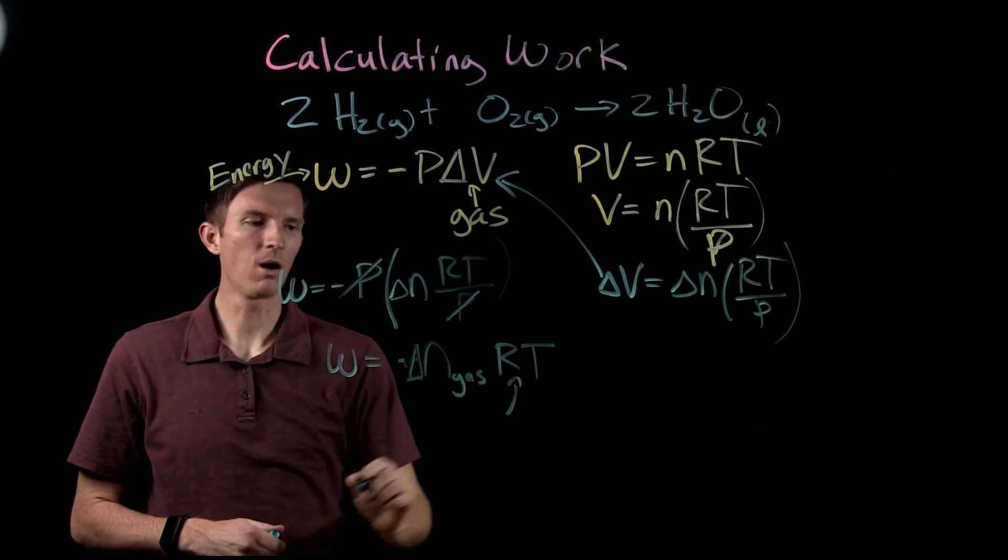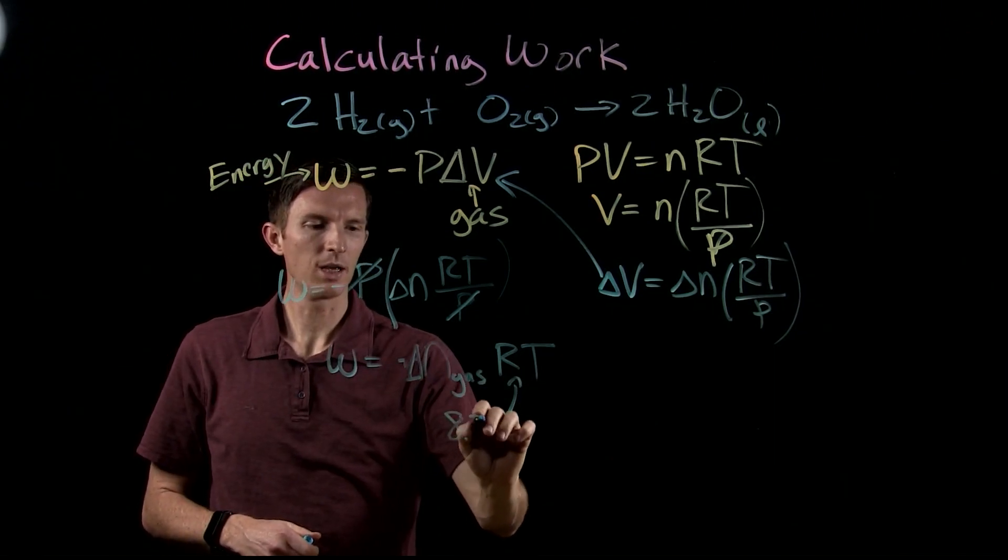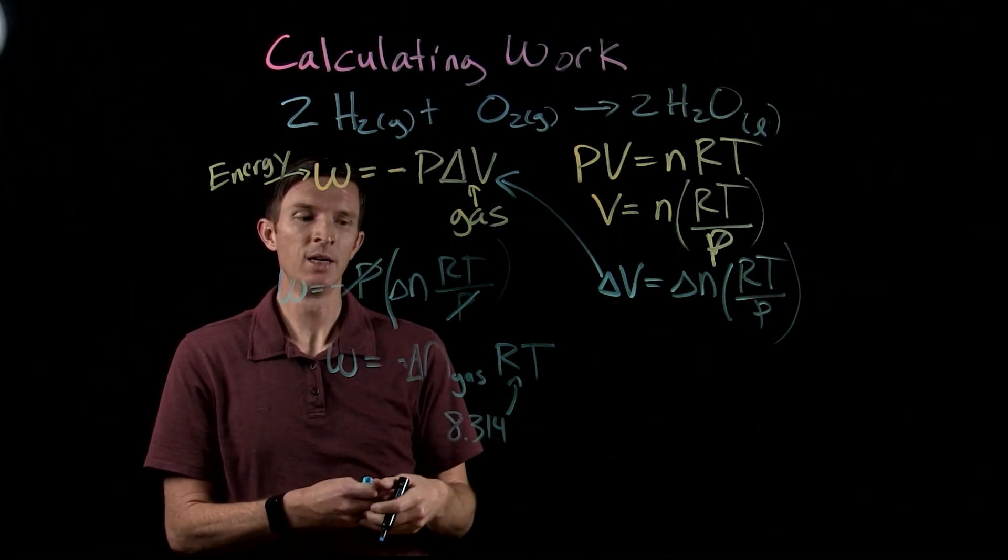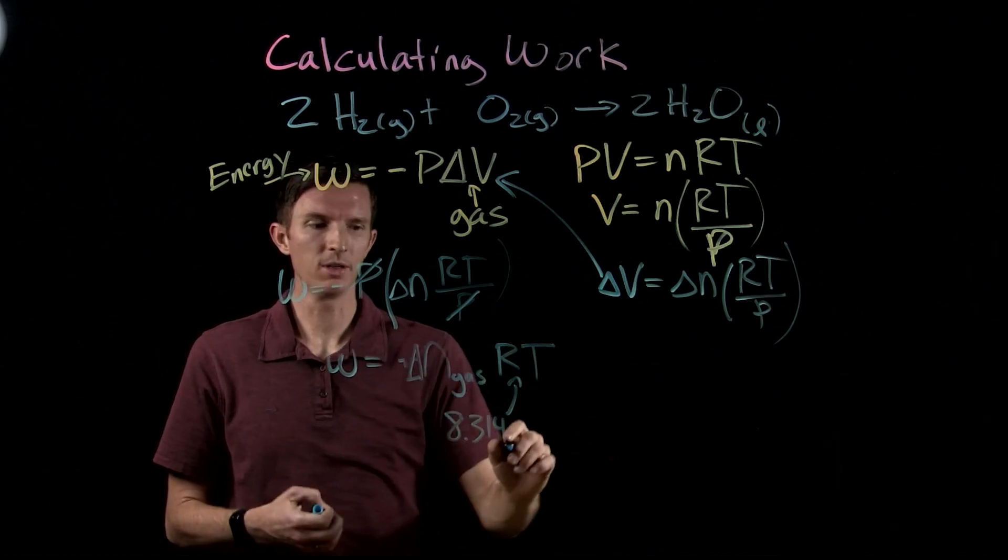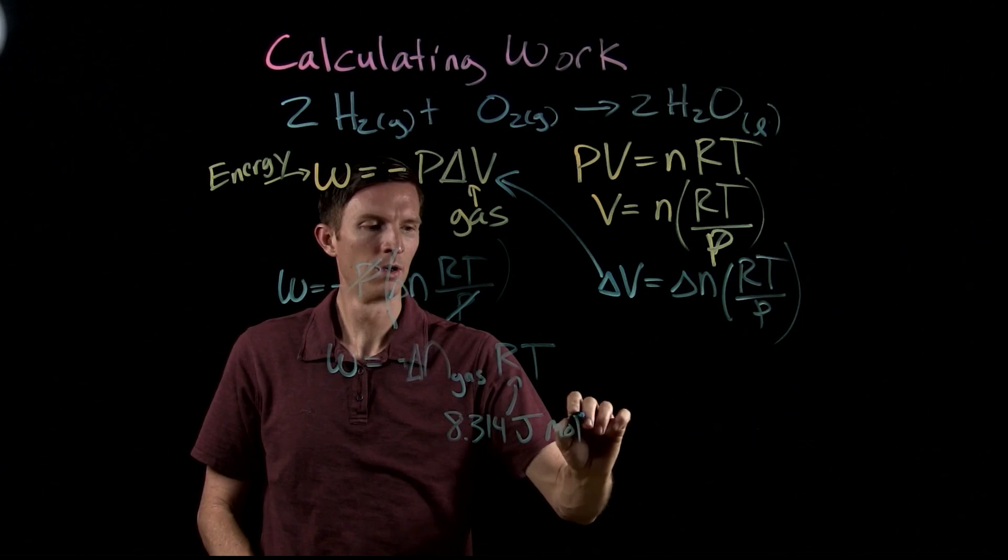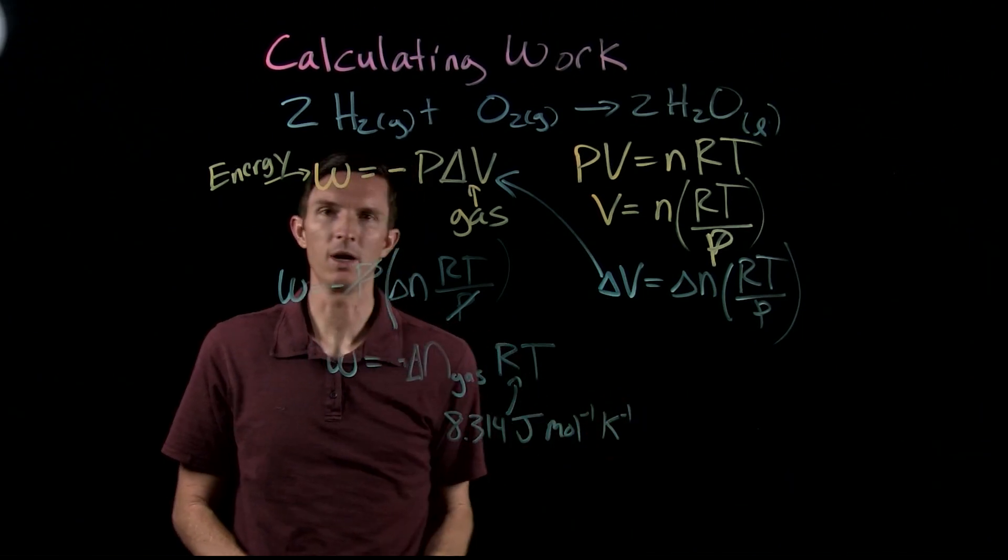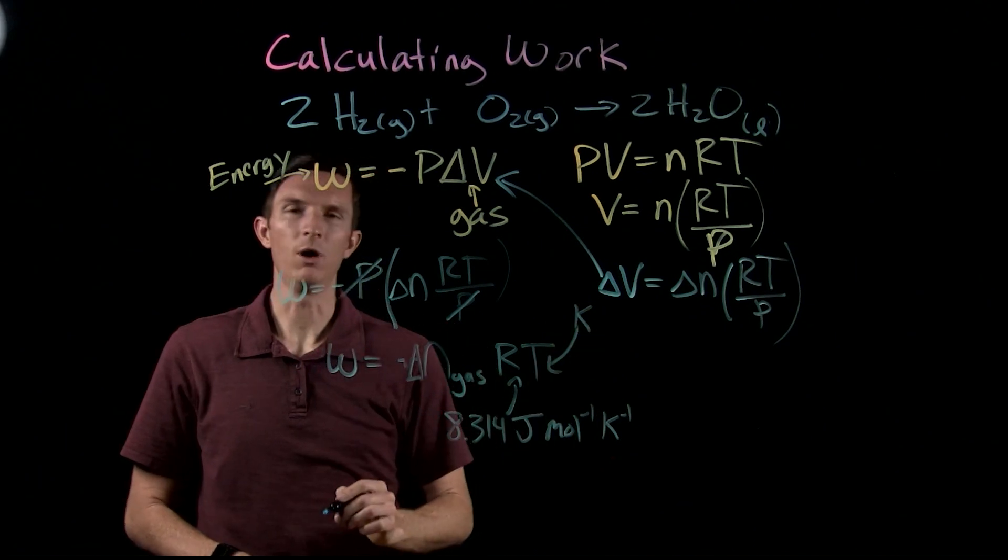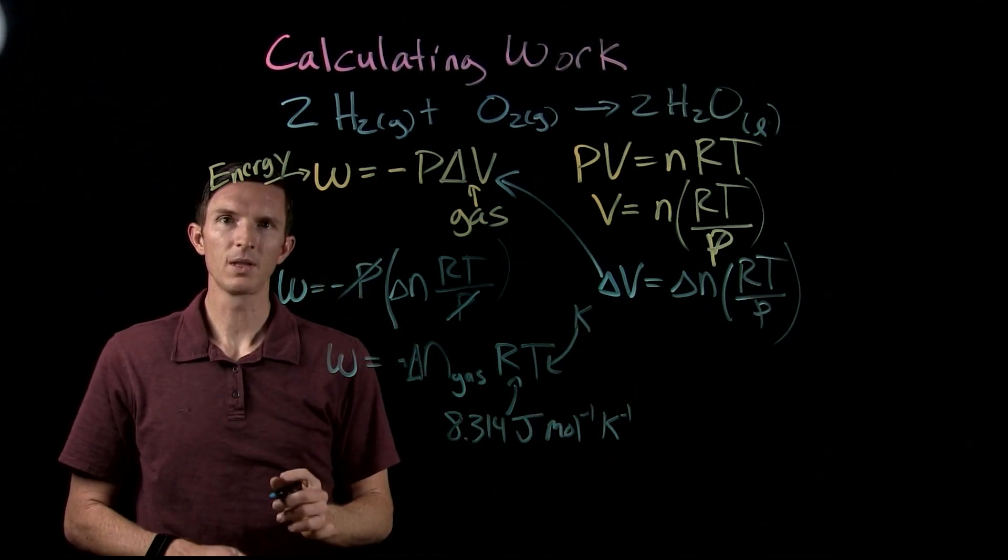So we go back to our R value. We're going to use a different R value than we used previously because now we're dealing with energy. Same idea of converting between different units, we just have different units of our R value. So it's going to be joules per mole per Kelvin. And so what does that mean? Our temperature needs to be in units of Kelvin.